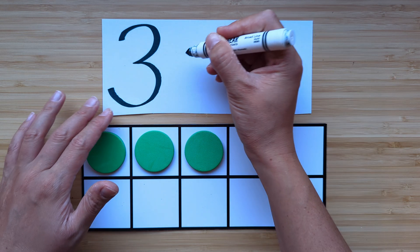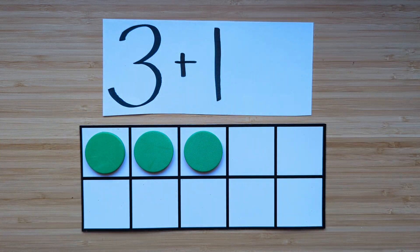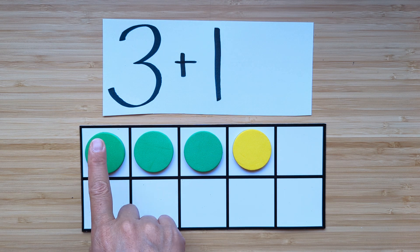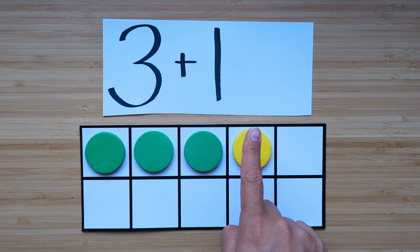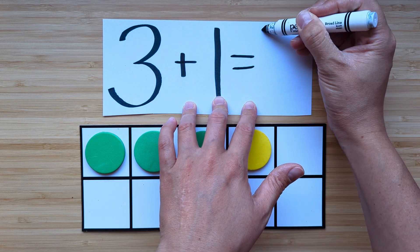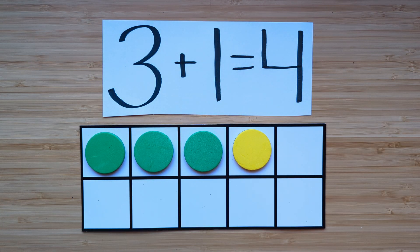What's one more than three? Point and count. One, two, three, four. Four is one more than three. Nice job.